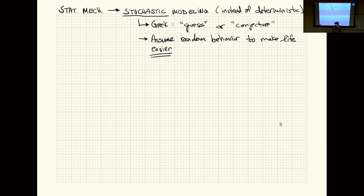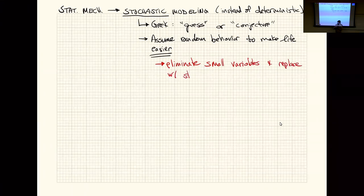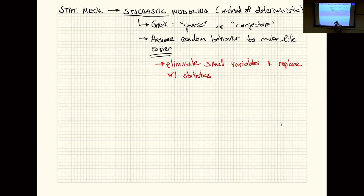You can eliminate variables by using probabilities — if something's going to happen 30% of the time, you don't need to think about the small variables, you just need to have it happen 30% of the time. That's a great way to put it: eliminate small variables and replace with statistics. If I'm modeling students coming into a classroom, I might be interested in the time between every student arrival — one student comes in, you wait 30 seconds, another student comes in, you wait 10 seconds, another student comes in.